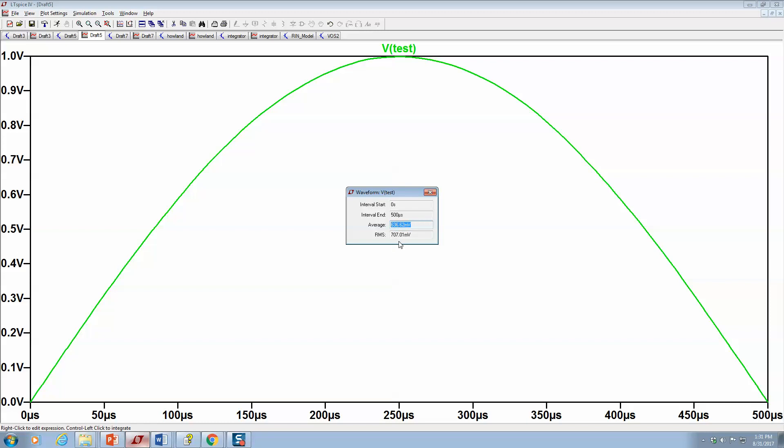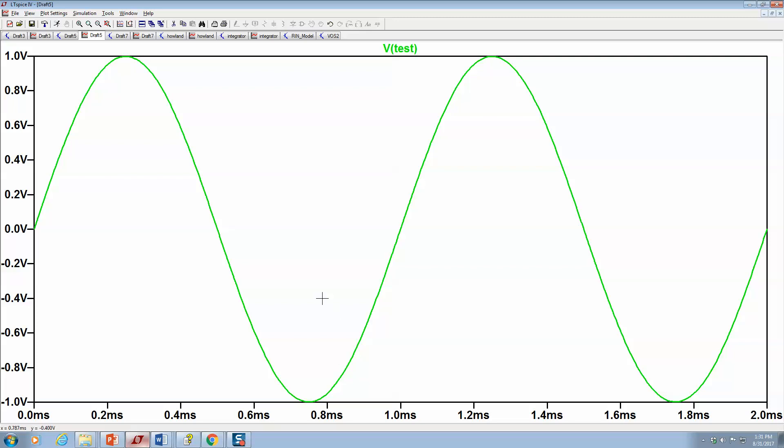Interestingly enough, we're getting almost the same RMS value as when we had the full sine wave. And the reason is that when we look at RMS, you square the signal and then integrate it.